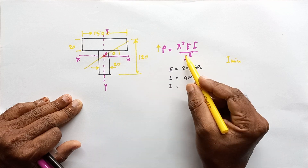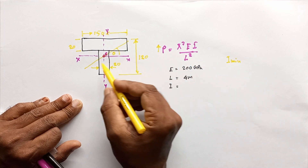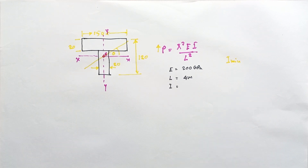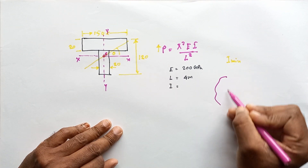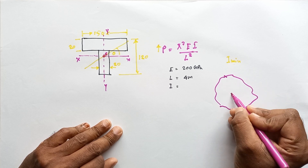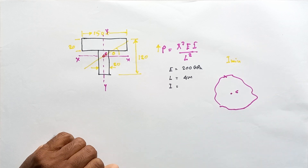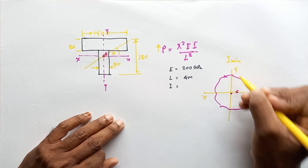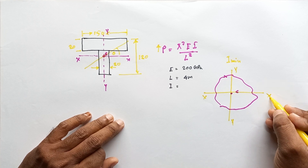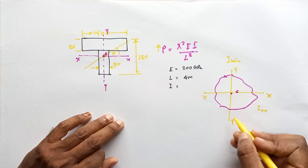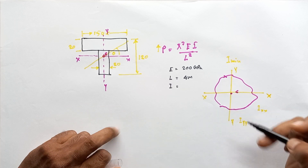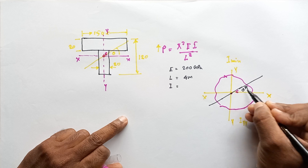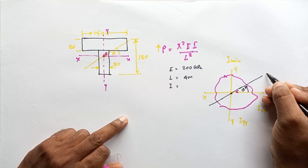When increasing the load, it will reach the minimum buckling load first, so the column will buckle around the minimum I value axis. We need to find that minimum I value axis. To understand the theory behind this, consider an arbitrary area with centroid C, and take vertical and horizontal axes XX and YY through the centroid.